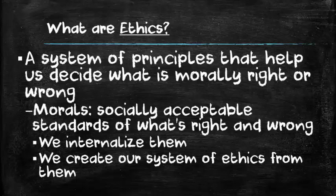We develop our morals through the workplace, our peers, our parents. All of these places play a role in how we decide what our moral compass will be, and we begin to internalize these things that we think might be right or wrong. That is how we create a system of ethics which guides our society to decide what is morally right or wrong. This helps us to develop laws and it helps us to guide our behavior when we come into contact with other people in the workplace, in the classroom, in a movie theater — all of these places where we come into contact with other people.